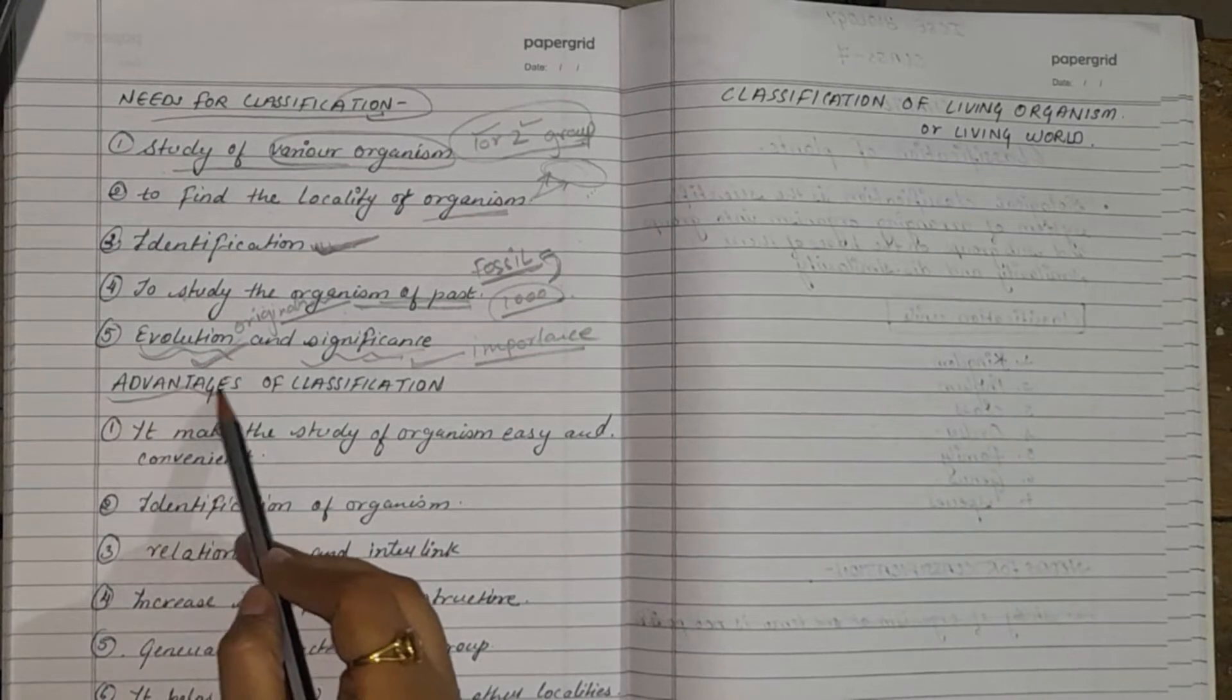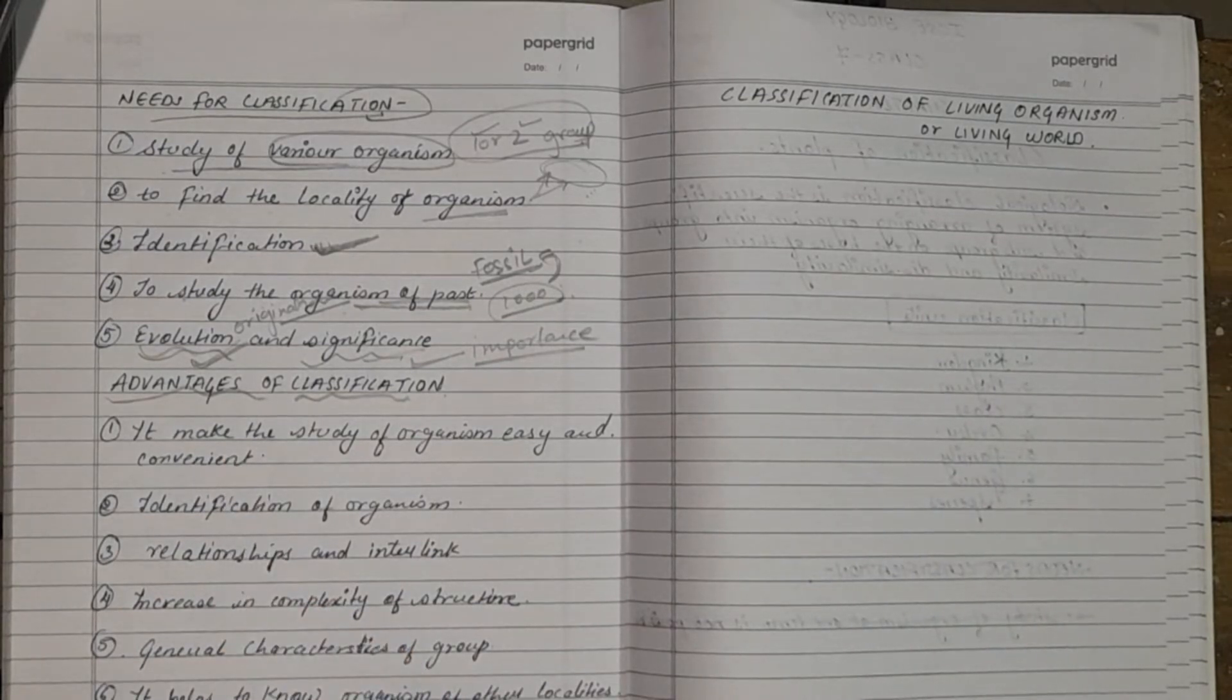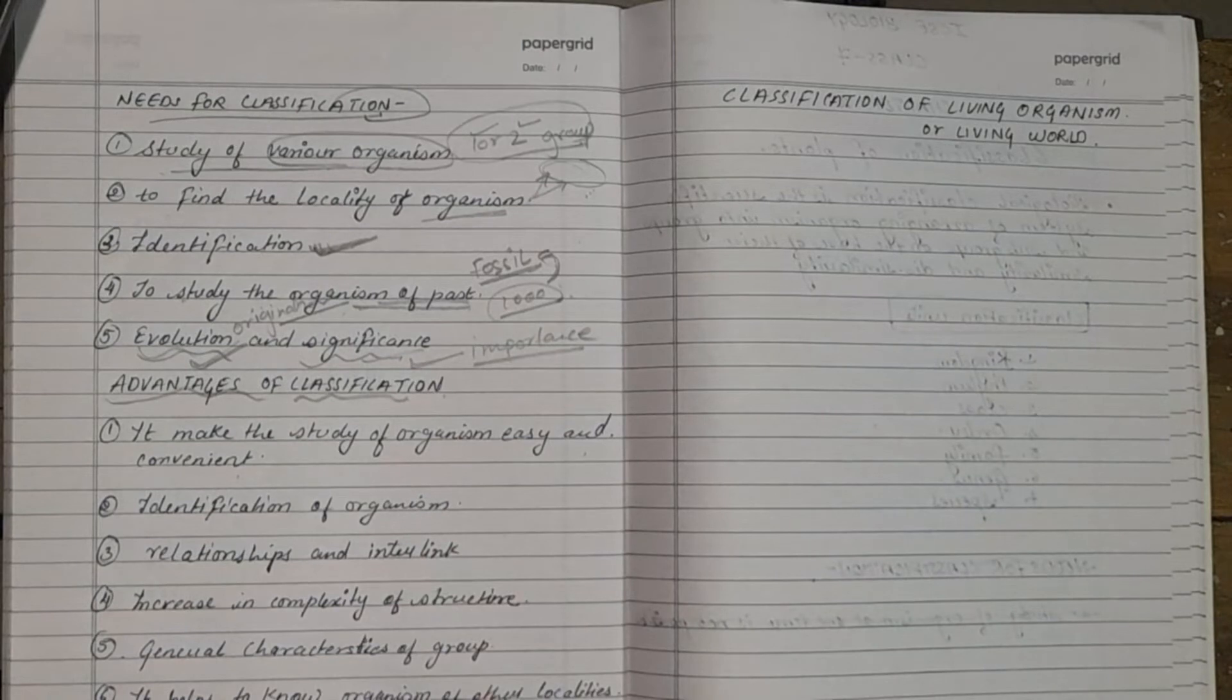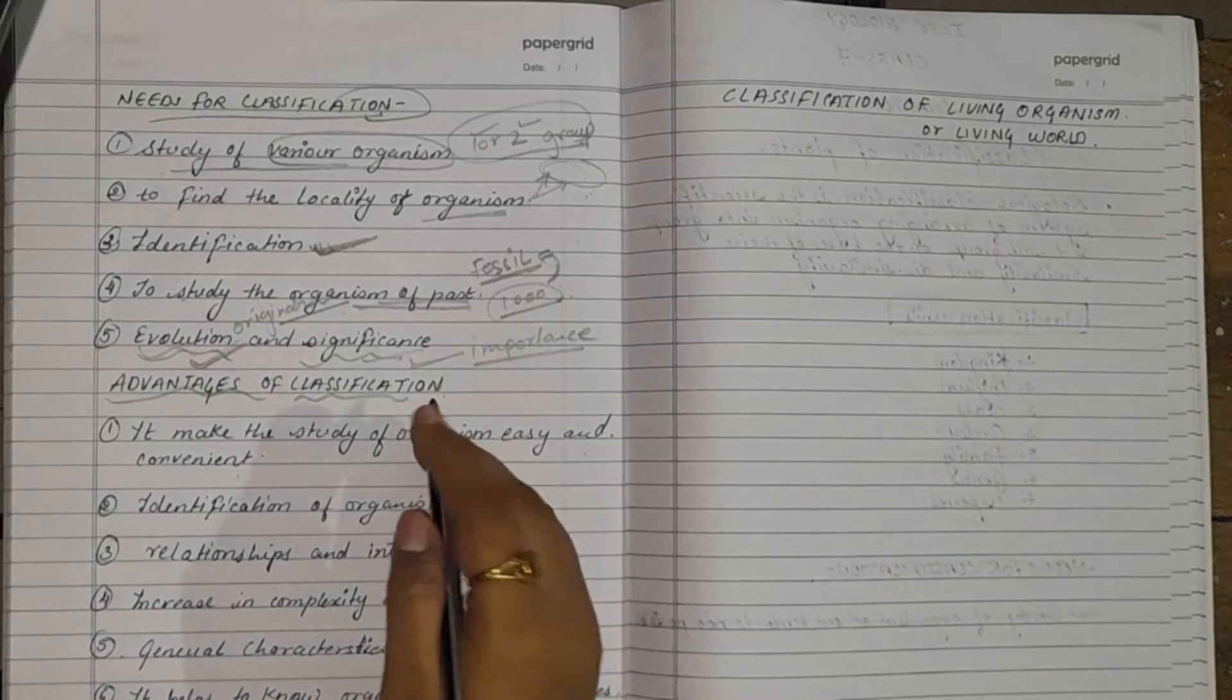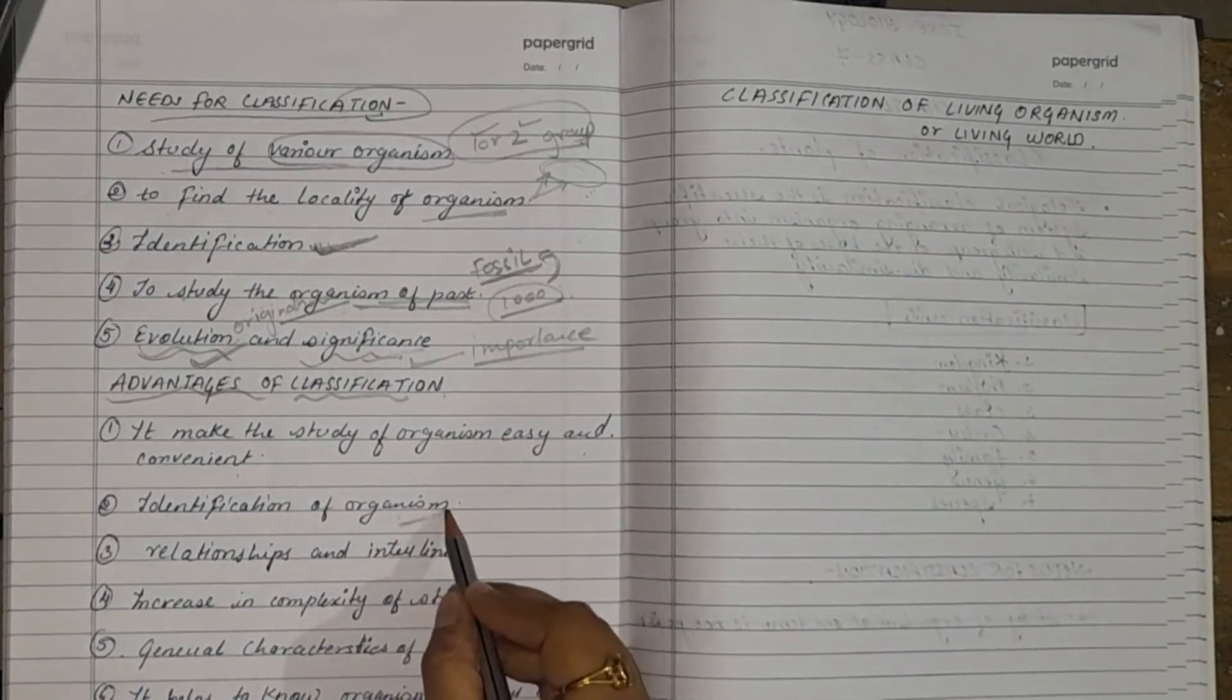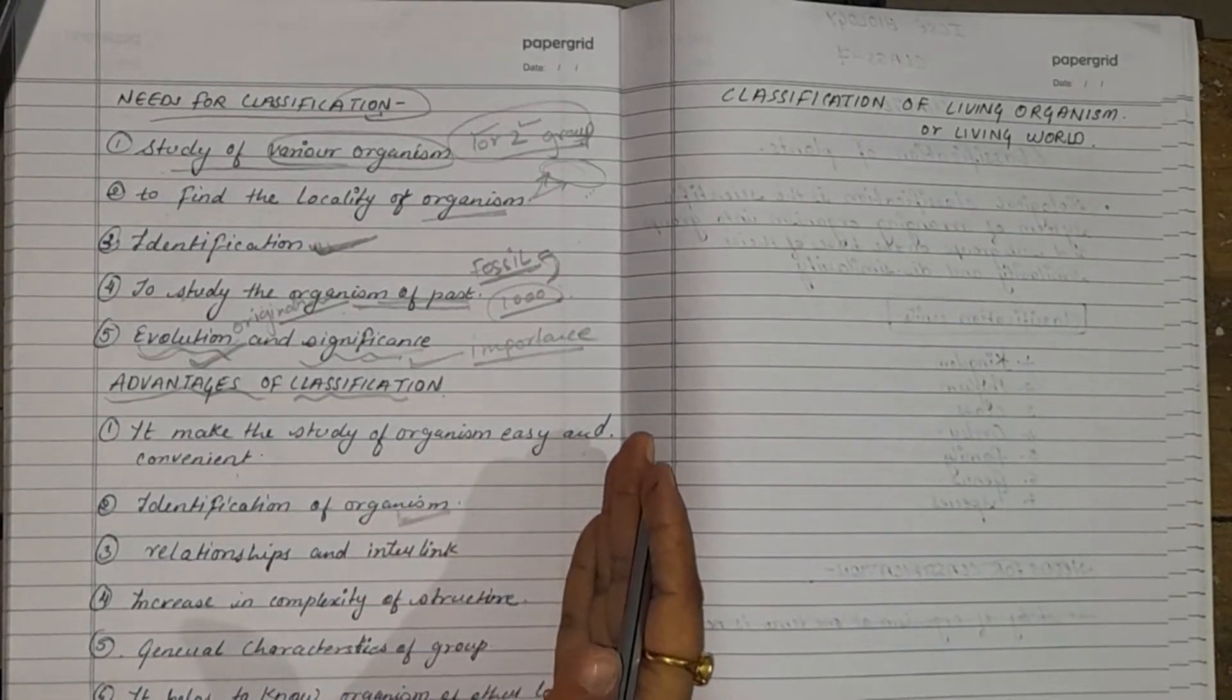Now we are going to study about advantages of classification. What are the advantages of classification? It makes the study of organisms easy and convenient. It means that if an organism is classified, we will be easily able to find the proper characteristic features of the organism. Identification of organism, it is very important. Classification is done for the identification of organism as well as plants and animals.